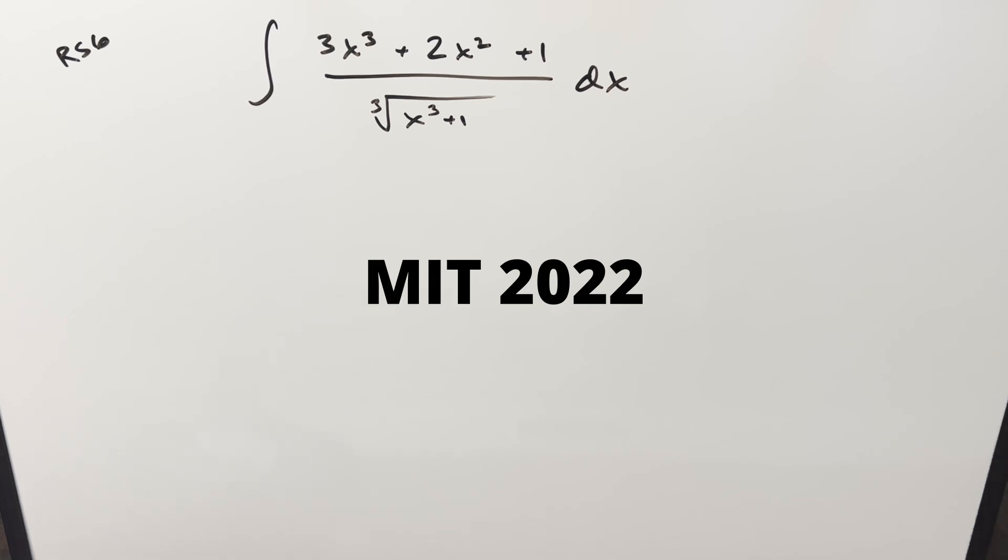Okay, I've written to you another integral. This one's from MIT integration B 2022, I think. Yeah, this one's from MIT 2022, regular season number 6. We've got the integral of 3x cubed plus 2x squared plus 1 over the cube root of x cubed plus 1 dx.